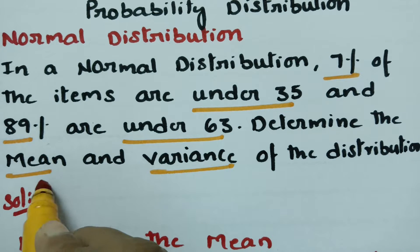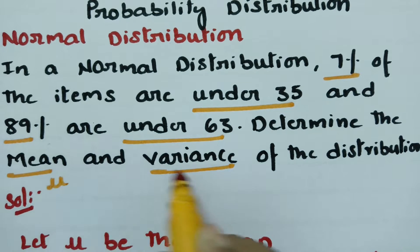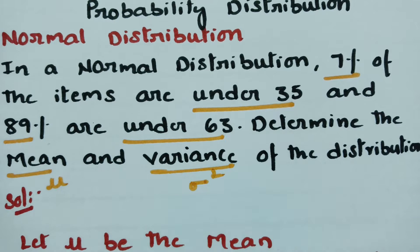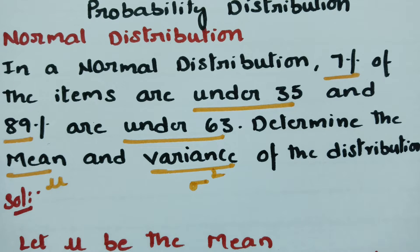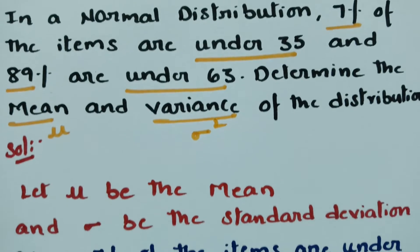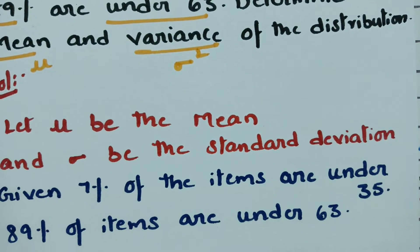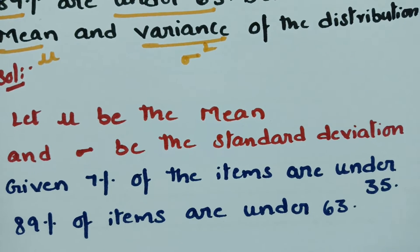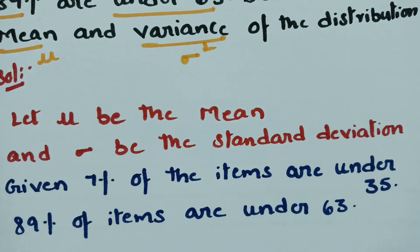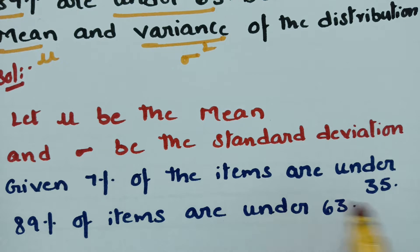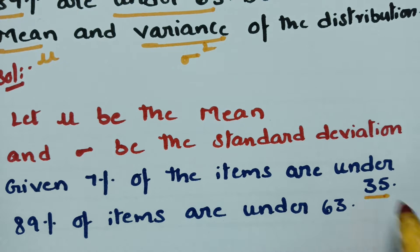Mean is nothing but mu and the variance is nothing but sigma squared, whereas standard deviation is equal to sigma. Let mu be the mean and sigma the standard deviation. From the question, it is given that 7% of the items are under 35.